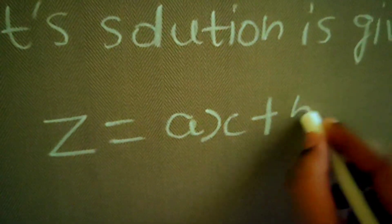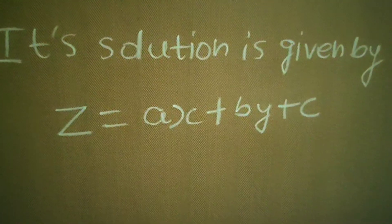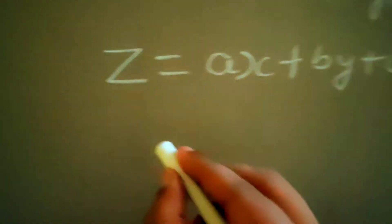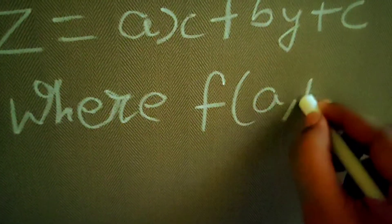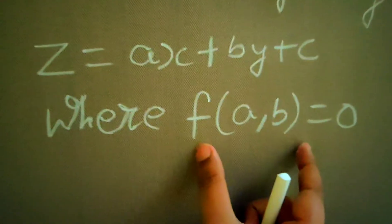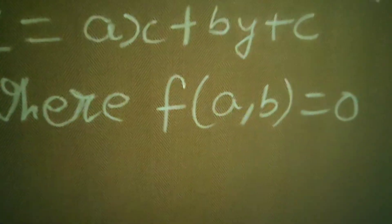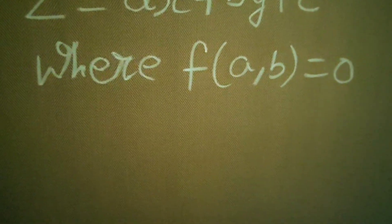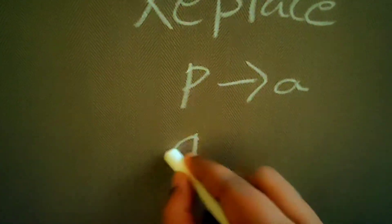The next step: the solution is given by z equals ax plus by plus c, where f(a, b) equals zero. This is an important thing — from the function of p comma q, you have to obtain a function of a and b.